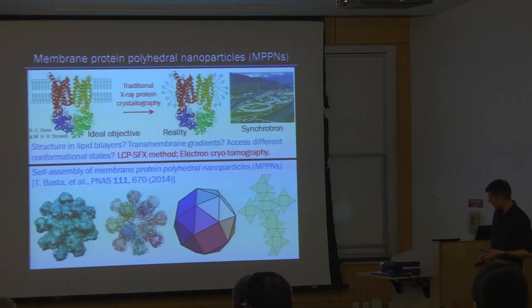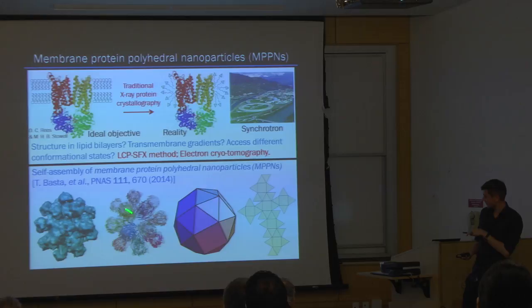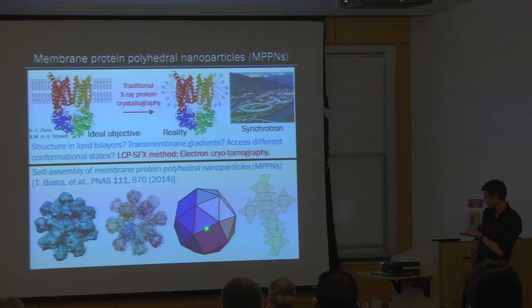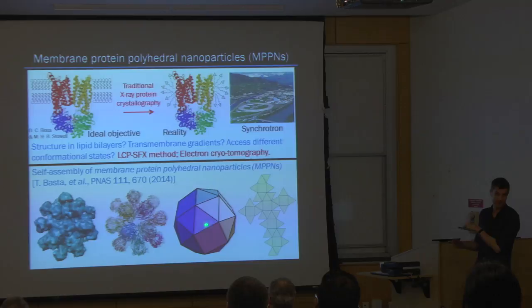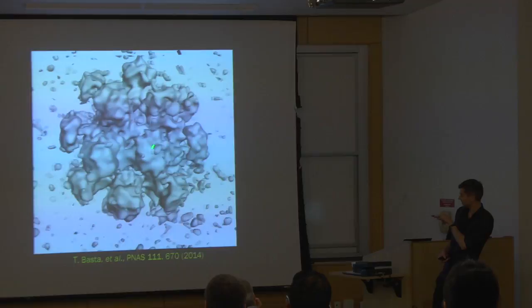A very interesting step in this direction was made by Doug Reese at Caltech, Michael Stowell at UC Boulder, and their collaborators, who observed the self-assembly of what they called membrane protein polyhedral nanoparticles — MPPNs. MPPNs are closed lipid bilayer vesicles composed of a lipid bilayer and several membrane proteins — we can think of them as little balloons. MPPNs have the important property that they have a well-defined characteristic size of about 20 nanometers, and the arrangement of the proteins in these MPPNs is not random but according to polyhedral symmetry. In these experiments, they used a membrane protein called the mechanosensitive channel of small conductance, or MscS, and observed the SNAP cube symmetry.